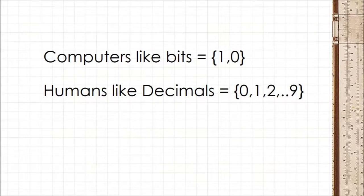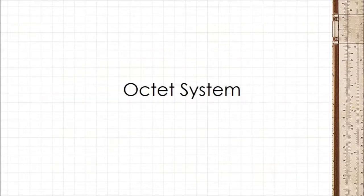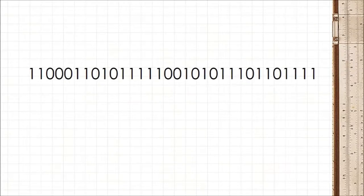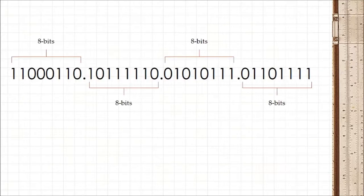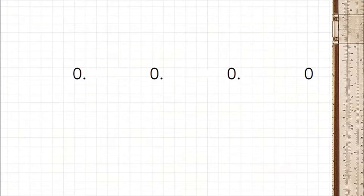So computer geeks the world over decided to invent the octet system, where the string of 32 bits is divided into 4 octets, and each octet is 8 bits long. An 8-bit number can have a value from 0 to 255, and we separate each octet with a dot. So IP addresses in the octet system can range from 0.0.0.0 to 255.255.255 and so on.